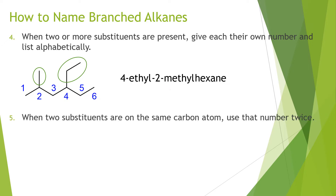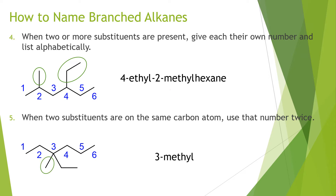When two substituents are on the same carbon atom, you use that number twice. In this example, the longest carbon chain is again six carbons, and both substituents are on carbon number three — a methyl group and an ethyl group. So the name is 3-ethyl-3-methylhexane.